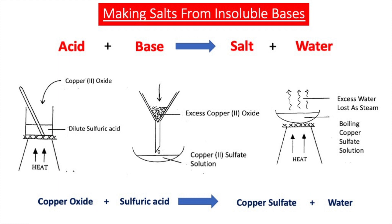In that video we made copper sulfate, so the insoluble base was copper oxide and the acid was sulfuric acid. We added the copper oxide until it stopped disappearing — when it disappears it forms soluble copper sulfate, and when the reaction is over the excess copper oxide starts appearing in the beaker, indicating all the acid has been neutralized. We then filtered off any unreacted copper oxide using a filter funnel and filter paper, and the solution that passed through was the soluble salt copper sulfate.